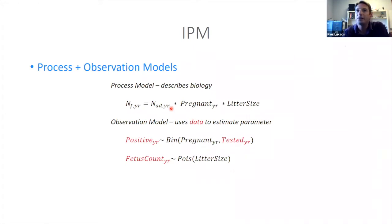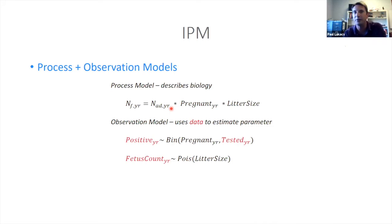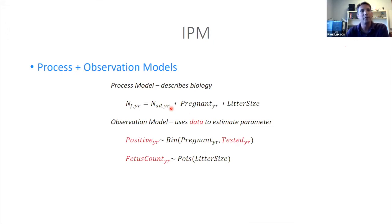You can imagine this being done for sub-adults and adults as well. In those cases you would have last year's population size times some survival rate giving you this year's population size, and maybe there's some telemetry, genetic marker capture, or photo data that could inform those pieces of the puzzle.